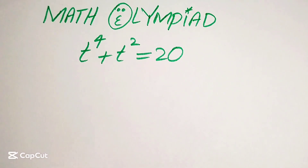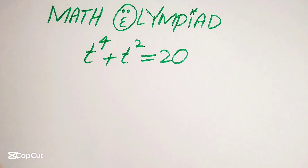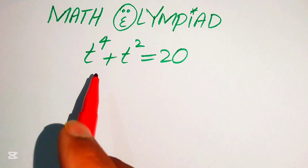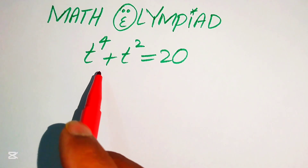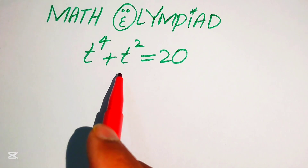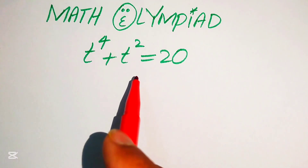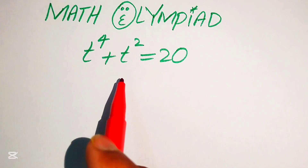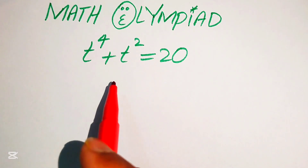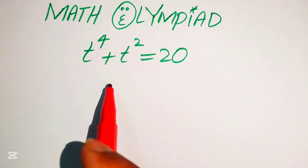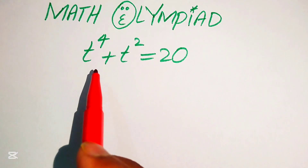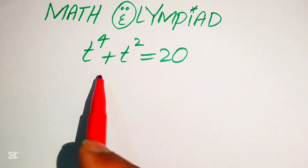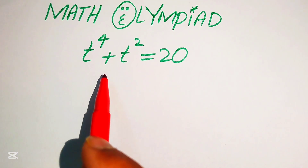Hello everyone, welcome to solve this nice mathematical algebra problem. Here we have t to the power of 4 plus t squared equals to 20, and we solve this problem for the values of t.